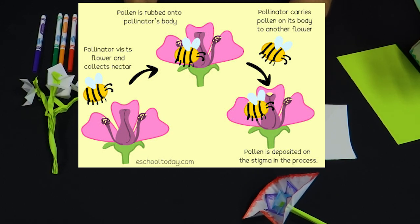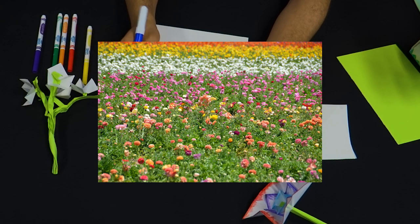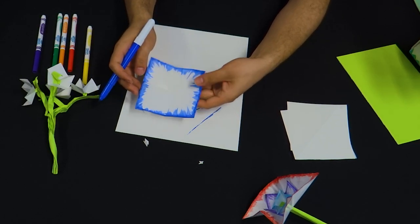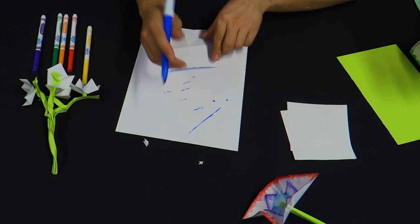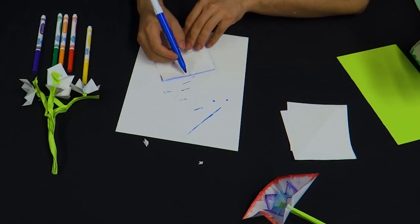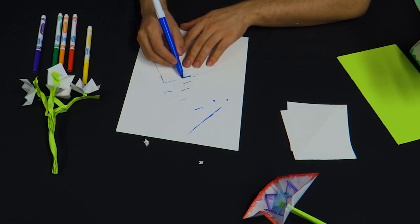The nectar and pollen gets all over the bees, and when the bee flies to another flower, it will pollinate that flower with the same pollen. They'll spread flowers that way. So that's kind of a neat fact there.